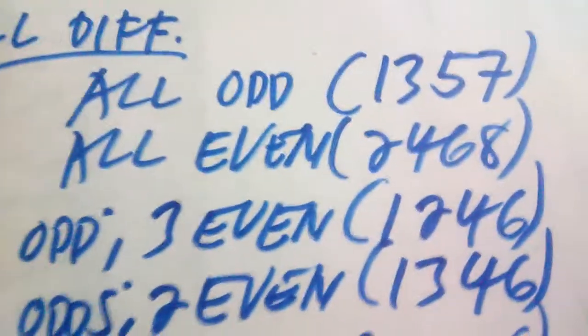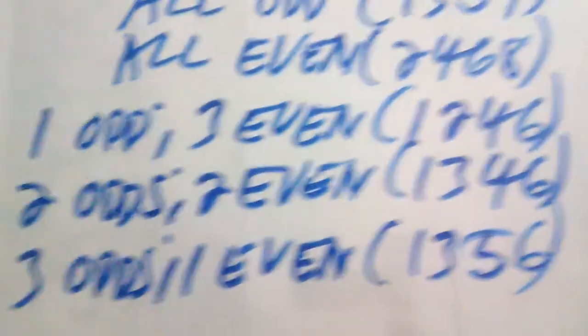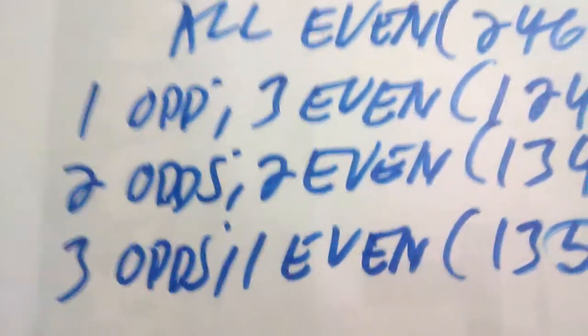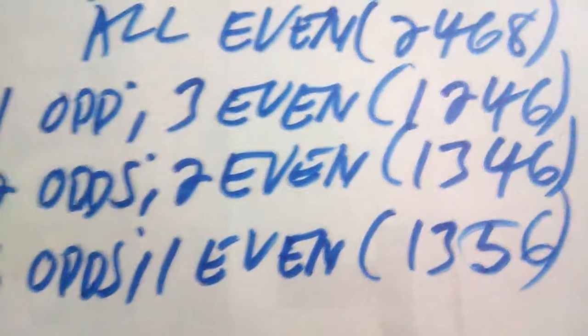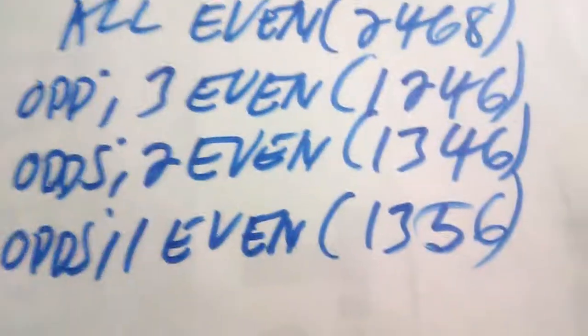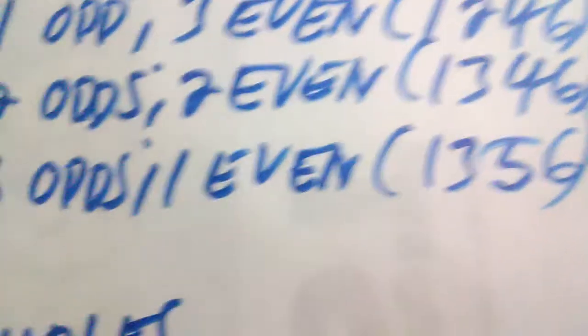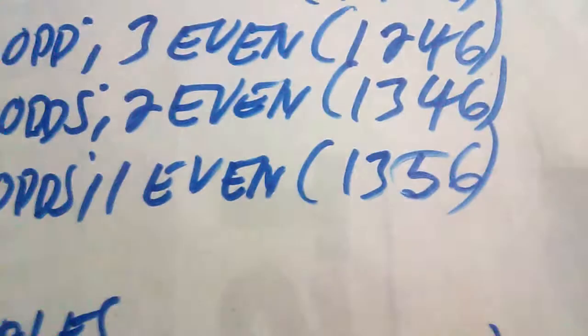For all-different combinations, we have: all-odd — example 1357; all-even — example 2468; one-odd-three-even — example 1246; two-odd-two-even — example 1346; and three-odd-one-even — example 1356.